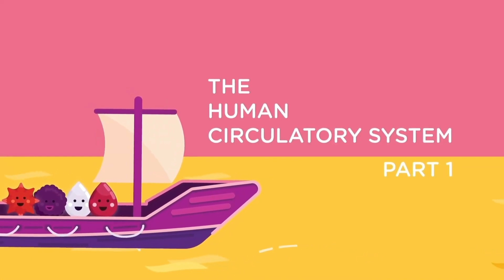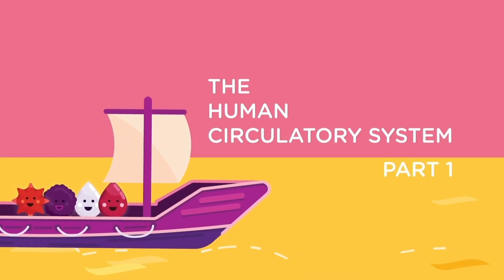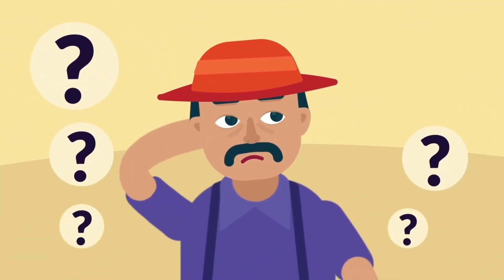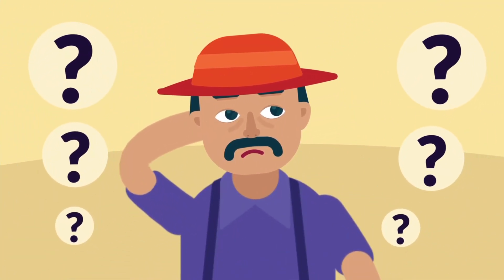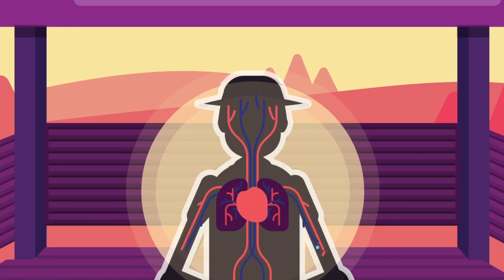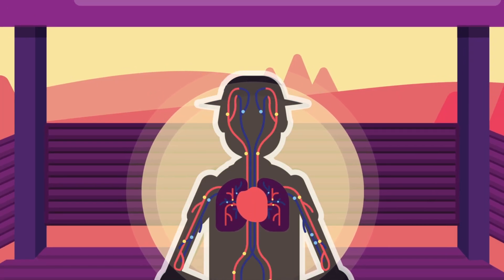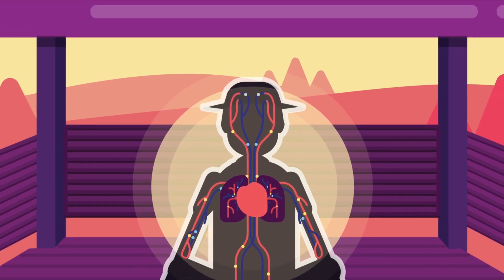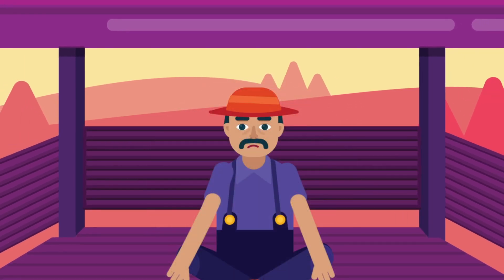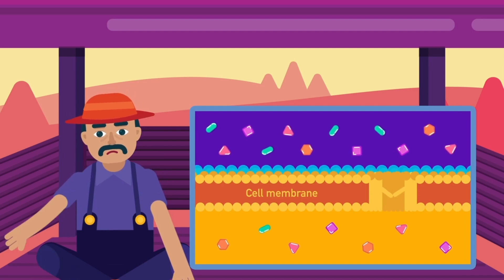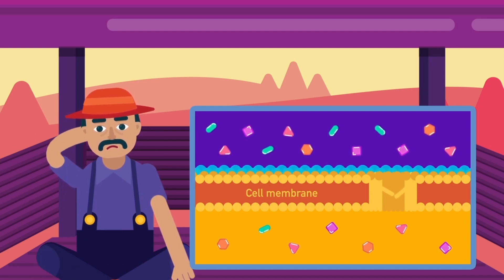The Human Circulatory System, Part 1. Why do we need a circulatory system? It is to ensure that the nutrients from the food we eat and the oxygen from our breathing reach all cells of the body effectively. However, if we recall our previous lessons, diffusion can also do the same.